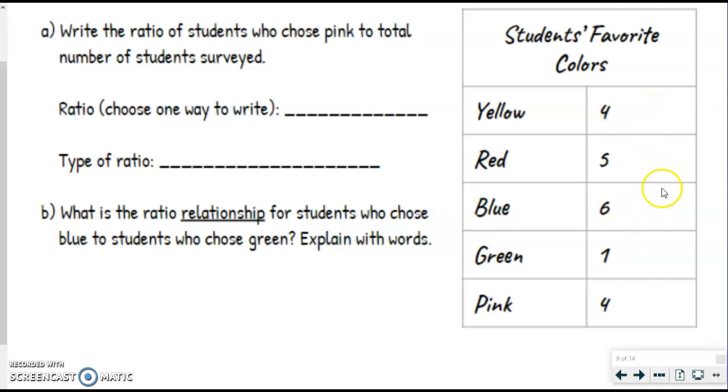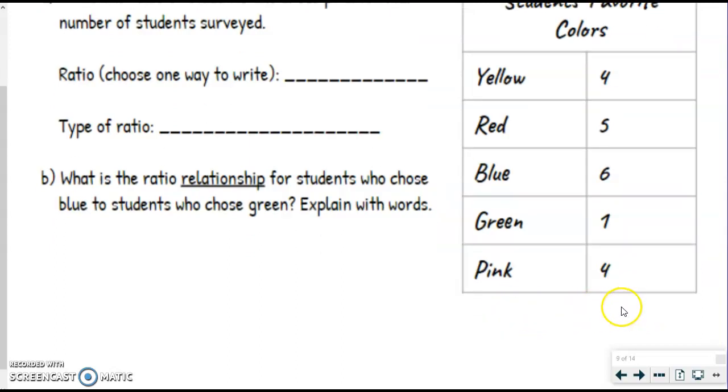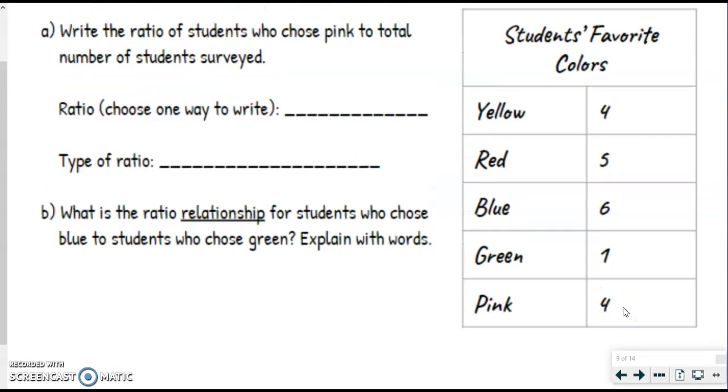You can do that in however way you like. If you want to group them in groups of 10, it doesn't really matter, but we've got four plus five is nine, plus six is 15, plus one is 16, plus four is 20. Now, if you want to write total and then 20 under here, you can. That's completely up to you.